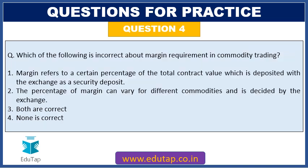Next question: which of the following is incorrect about margin requirement in commodity trading? (A) Margin refers to a certain percentage of the total contract value which is deposited with the exchange as a security deposit; (B) the percentage of margin can vary for different commodities and is decided by the exchange; (C) both are correct; or (D) none is correct.